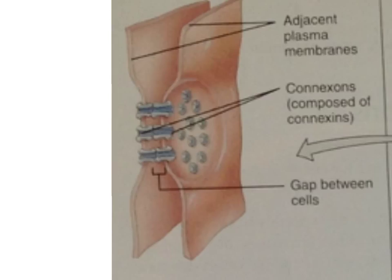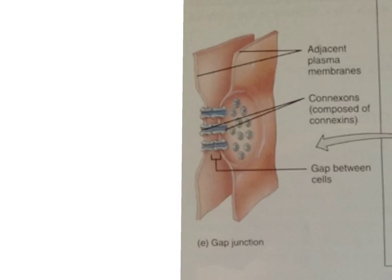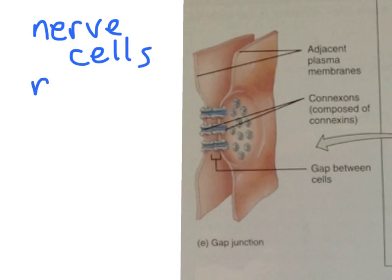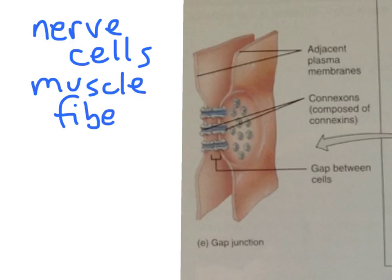Gap junctions allow cells in a tissue to communicate with each other through chemicals and electrical signals. They are common in the membranes of nerve cells as well as muscle fibers, which allows nerve and muscle impulses to be quickly conveyed from cell to cell, permitting normal function of the nervous system as well as muscle contraction.